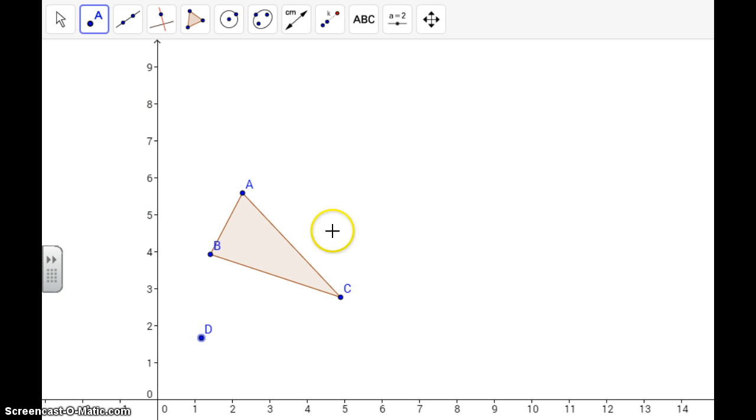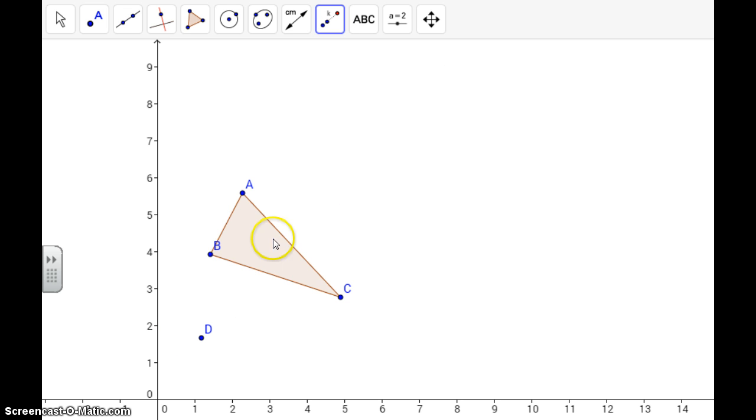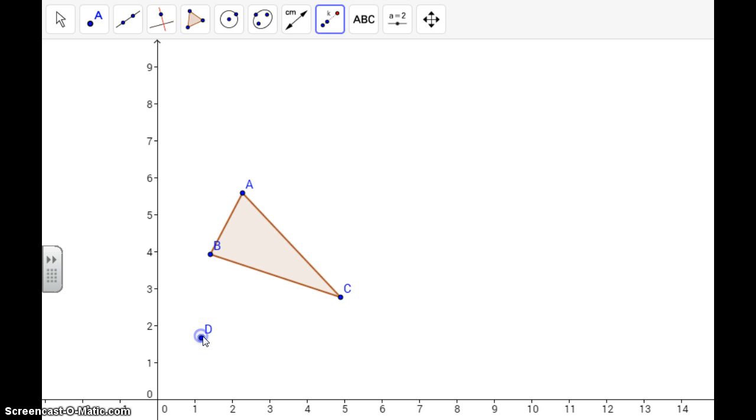So from here, I now want to dilate this polygon from the center of dilation. So what I'm going to do is go to the fourth one over from the right, and I'm going to go to dilate from point. Click that button. The first thing you do is you click on the object, and then the center of dilation.